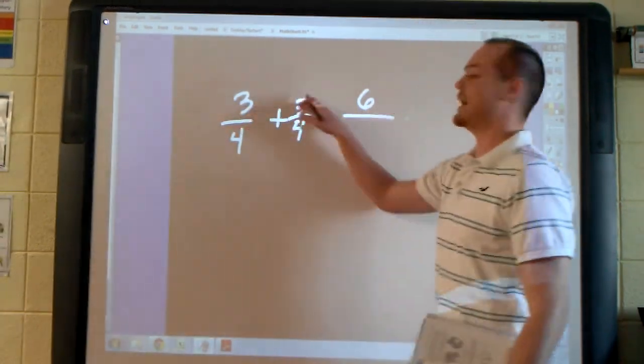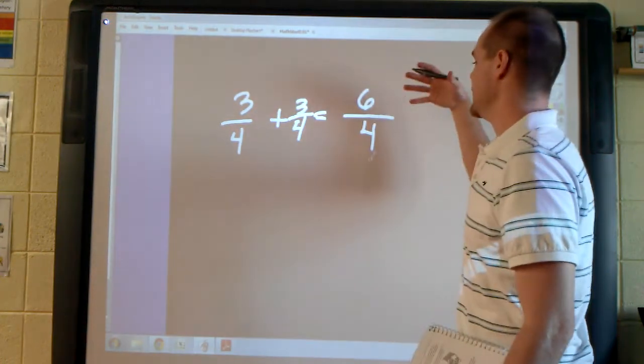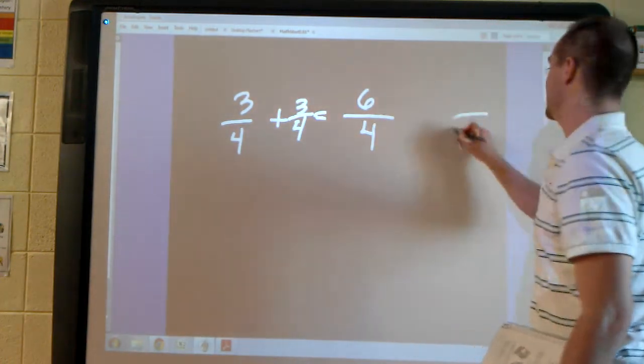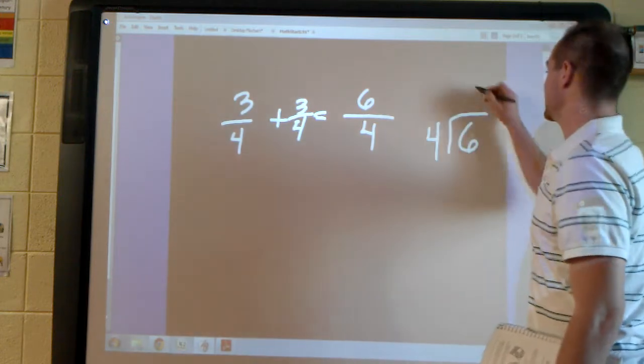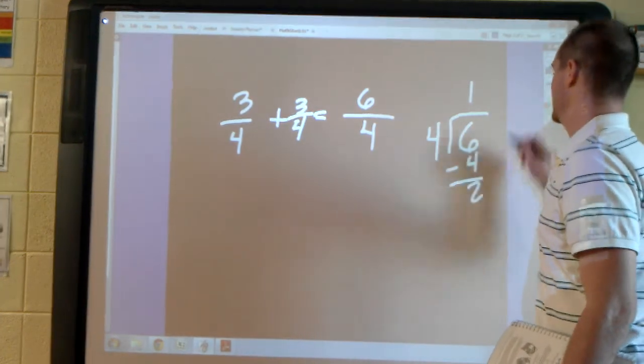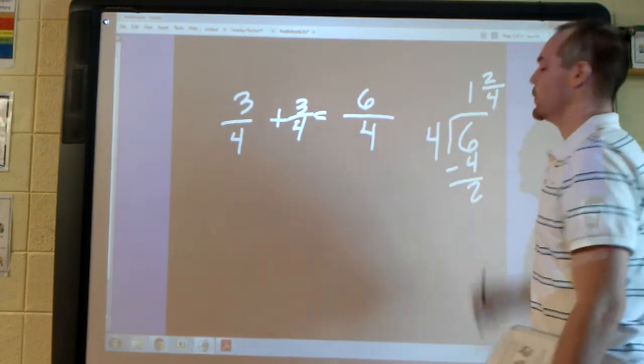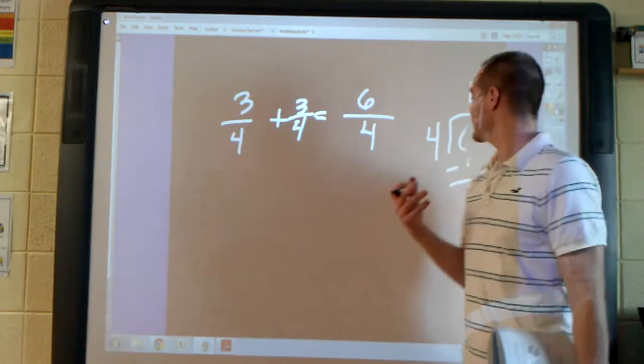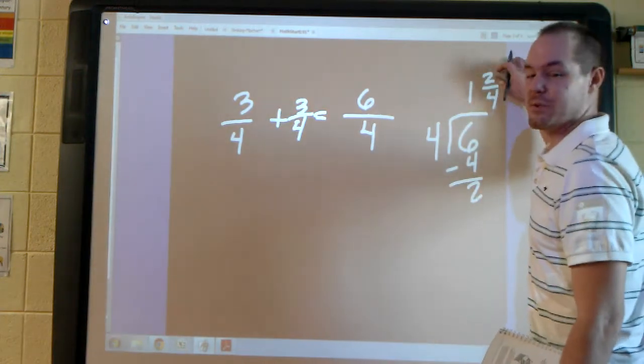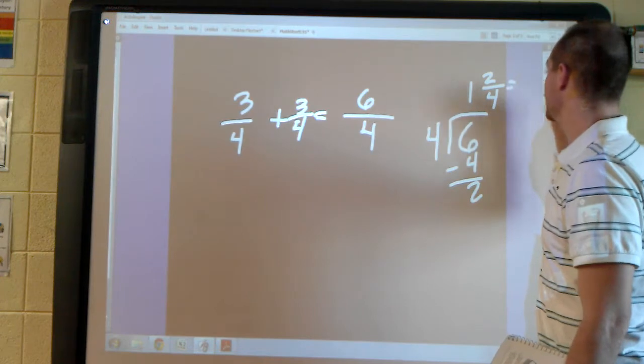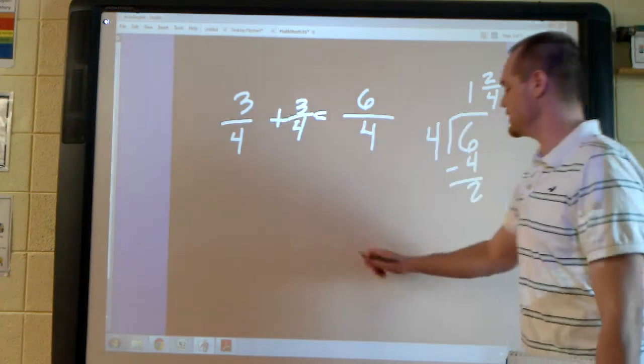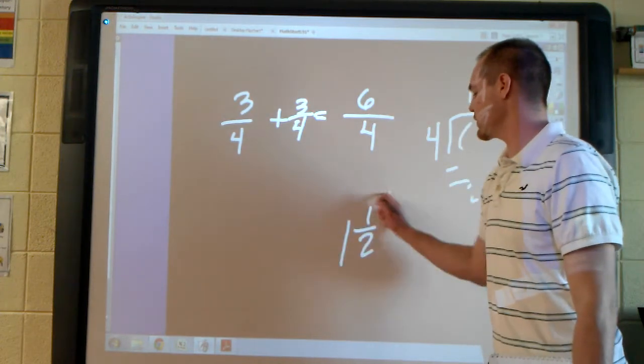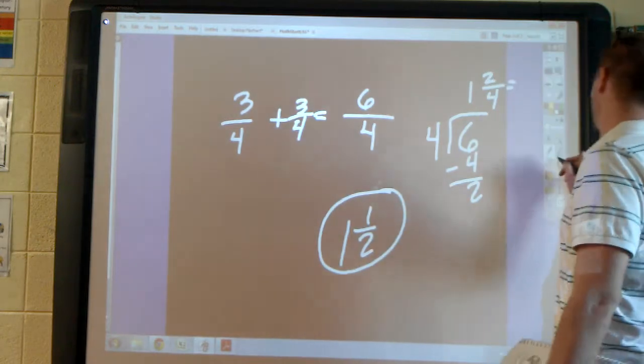The numerator adds, the 4 stays the same, and we divide numerator by denominator. 4 goes into 6 once. We end up with 1 and 2/4. I know from practice that 2/4, 2 is half of 4, so this fraction is equal to 1/2, which means the mixed number easily converts to 1 and 1/2. I would like you to put 1 and 1/2 down.